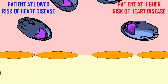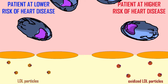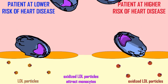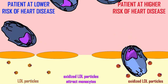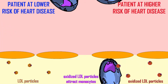In this comparison of two patients, the patient on the left with the lower risk of heart disease only has LDL particles in their blood vessel wall. The monocytes are not attracted, and so they do not leave the blood to enter the blood vessel wall. While in the patient on the right, the oxidized LDL particles do attract the monocytes, which then leave the blood for the blood vessel wall.